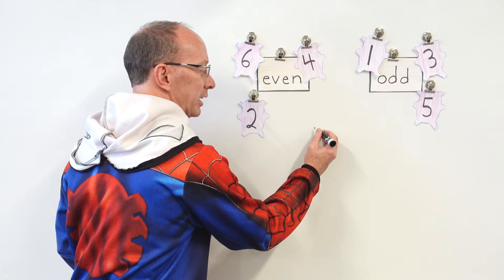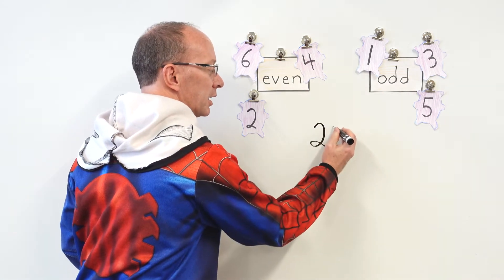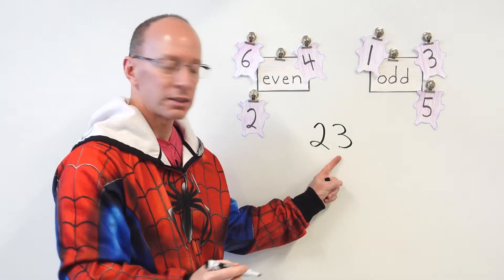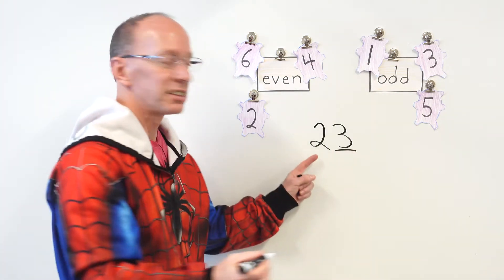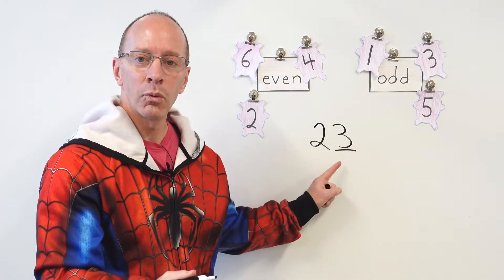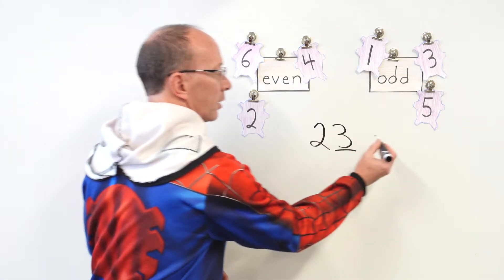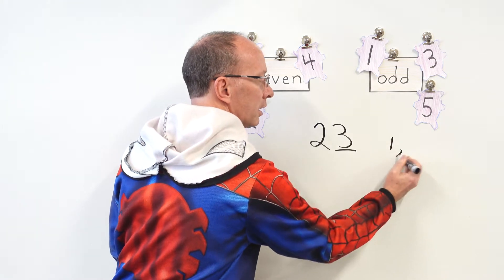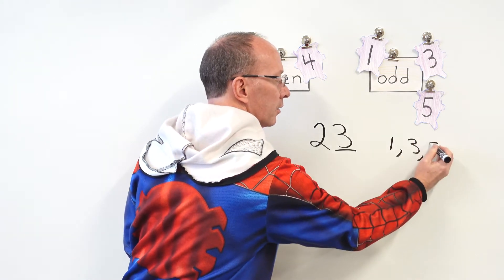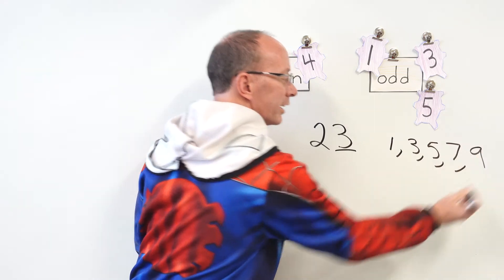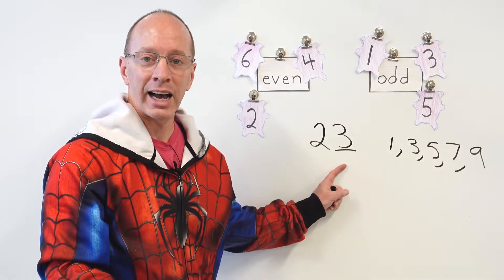For instance, if I have a number like 23, this is the 1's place right here, and this is the 10's place. But we're only looking in the 1's place, and we look at that number right there. And if that is 1, 3, 5, 7, or 9, that will be an odd number.